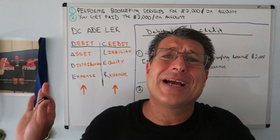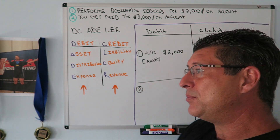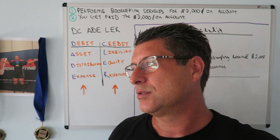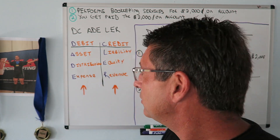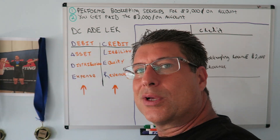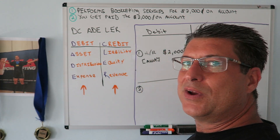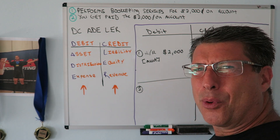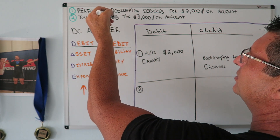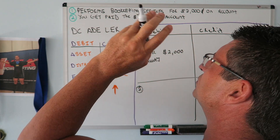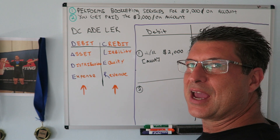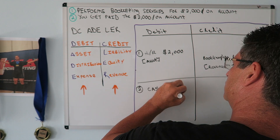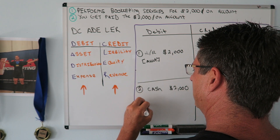We got paid — we got the cash! Two thousand dollars cash coming in. If you've been watching the videos, you know cash is an asset and it's going up, so that's a debit. We got paid the two thousand dollars that was on account, so cash two thousand dollars is our debit.